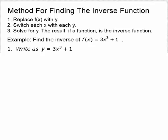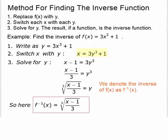Then we're going to switch each x with each y. So now we have x equals 3y cubed plus 1. And our third step is to solve that equation for y. So we subtract 1 from both sides, divide both sides by 3, then cube root both sides. And we get cube root of x minus 1 over 3 equals y.